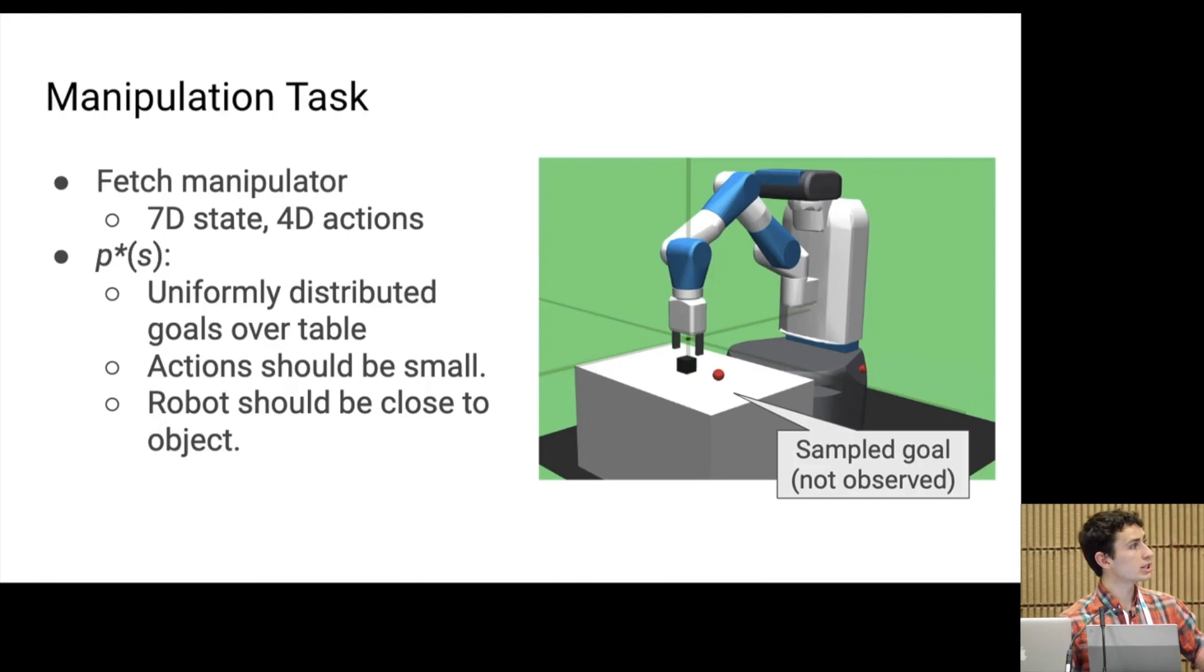For this task, the target distribution will also include some priors on actions being small and the robot arm being close to the block. Note that the baselines will have access to all of the same information for fair comparison. There are two important things to note about both environments. First, the goals that we sample at test time will not be observed, and so the agent must explore to find this goal state.